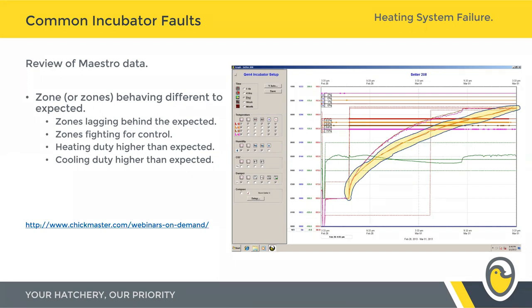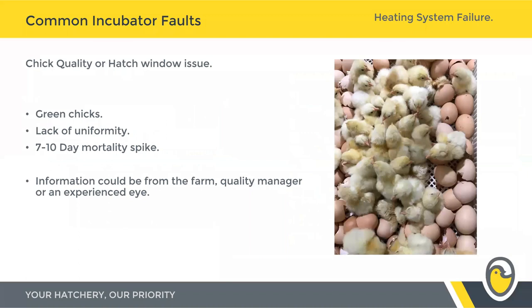We did spend quite a bit of time reviewing Maestro data in one of our earlier webinars — I highly recommend checking webinars on demand on our website for a recording of that. When it comes to chick quality, if your temperature regulation inside the incubator isn't uniform from front to back and within individual zones, your temperature uniformity will have a direct impact on the hatch window. If a hatch window that's normally around 12 hours suddenly stretches to 18 to 20 hours, that's a pretty good indicator something's gone abnormal on your temperature control inside that cabinet.